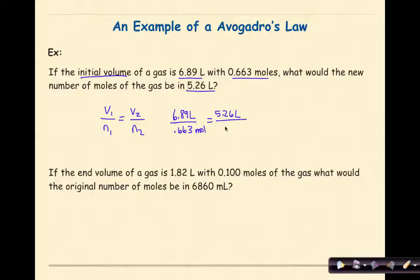So we are going to solve for N2. If we cross-multiply and divide by 6.89 liters, we find that the new number of moles would be 0.506 moles of gas.